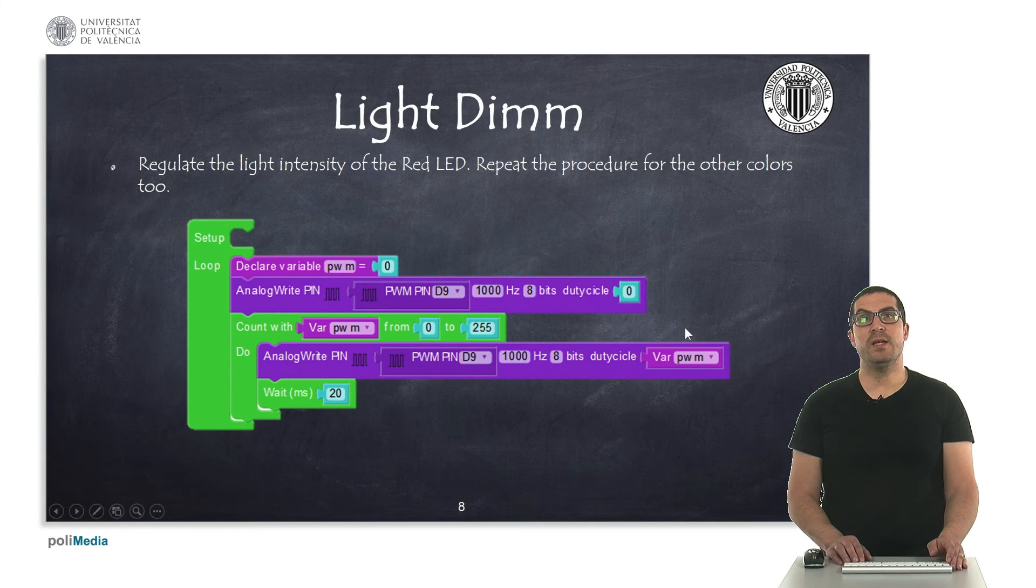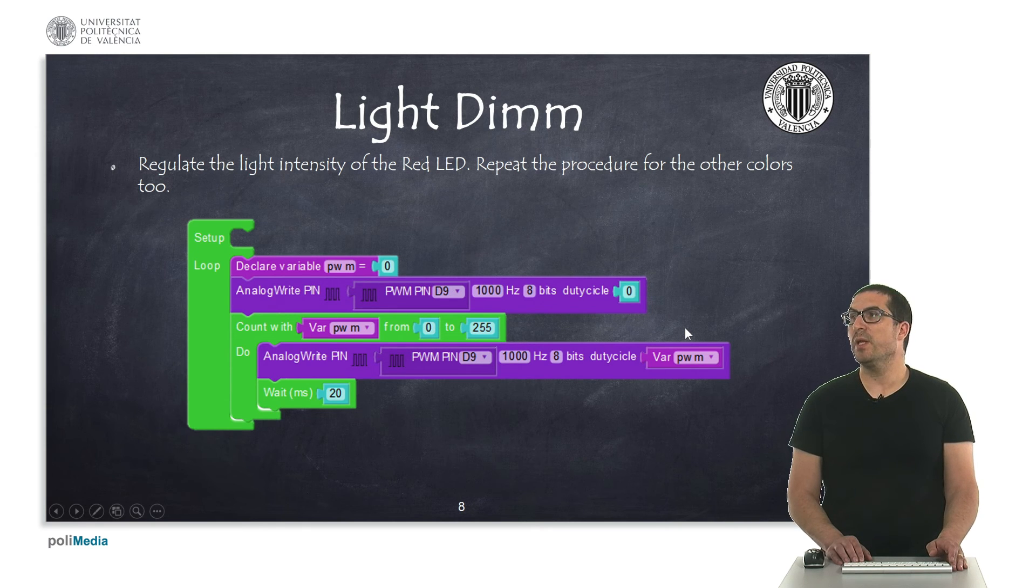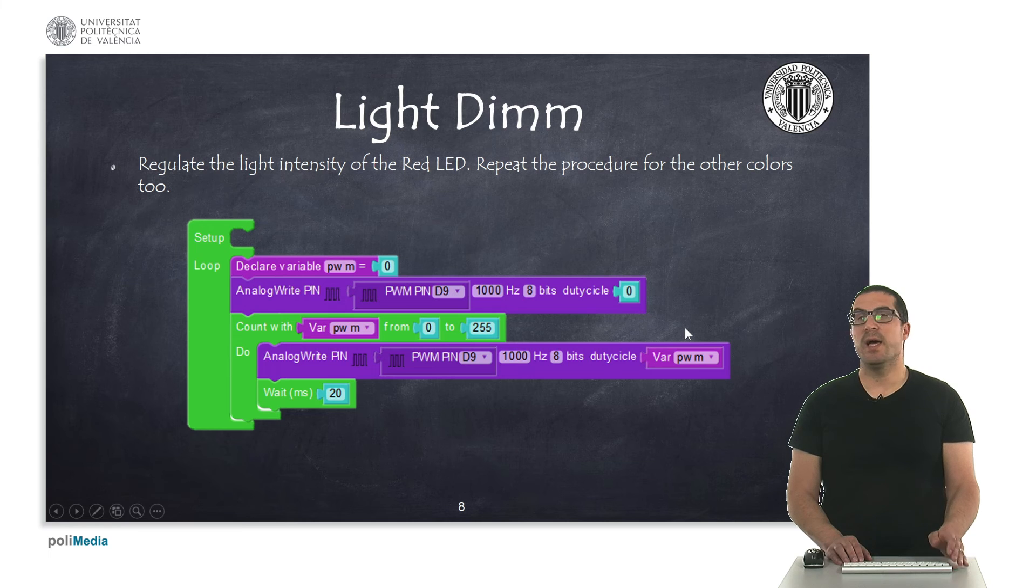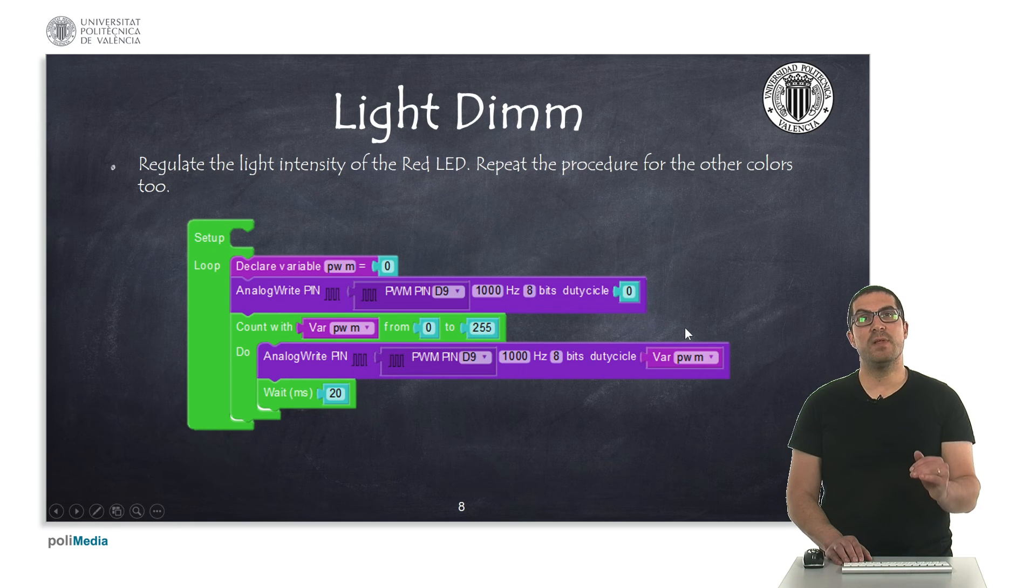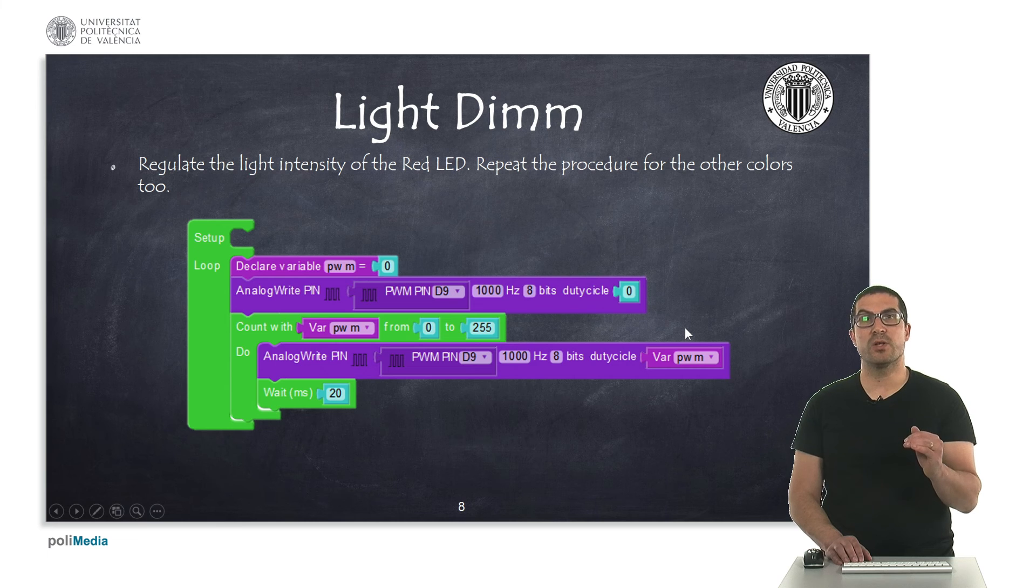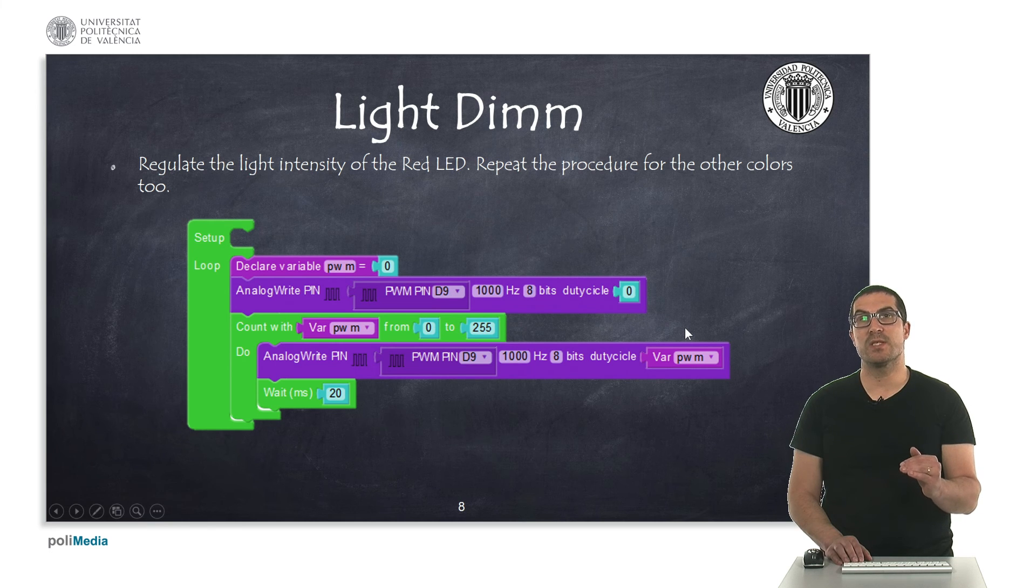And finally, in this example, what I'm doing is, again, using the analog write instruction. What I'm doing is regulating the intensity of the light, but only in one of the pins, so it's the red color.